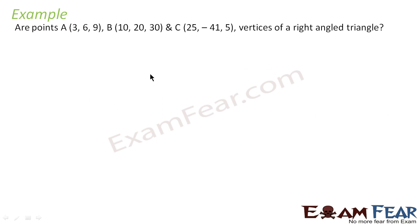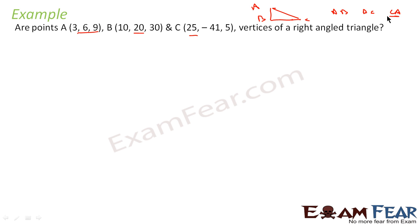Let's take an example. We have to find whether the points A, B and C are vertices of a right triangle. We will first find the distances AB, BC, and CA, and then check whether the Pythagorean theorem is applicable. If yes, we will say that they are vertices of a right triangle. If no, that means they are not the vertices of a right triangle.